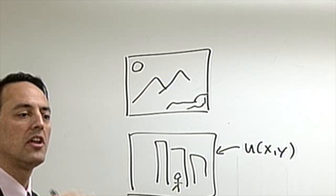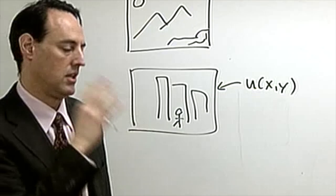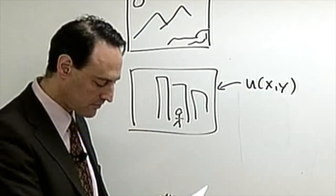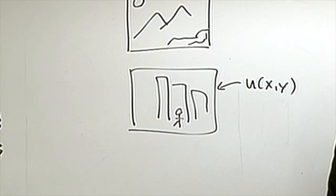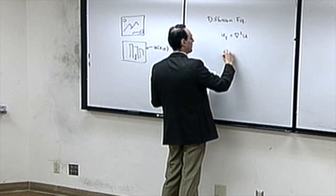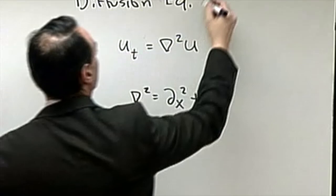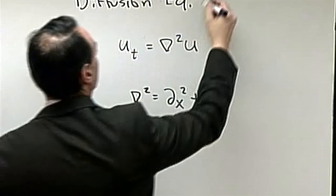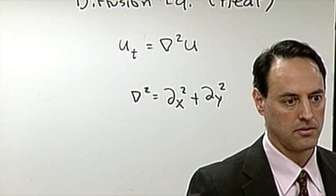Now if we start thinking along the direction that this image field is really just a collection of data, then we can start manipulating it in ways you wouldn't normally think of if you're just thinking about it as an image. In particular, there's one kind of partial differential equation known as the diffusion equation. In its simplest form: u_t equals del-squared u, where del-squared is two derivatives in x and two in y. It's called the heat equation or diffusion equation.